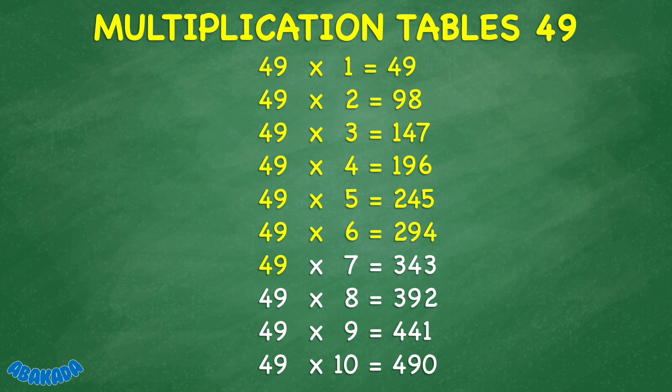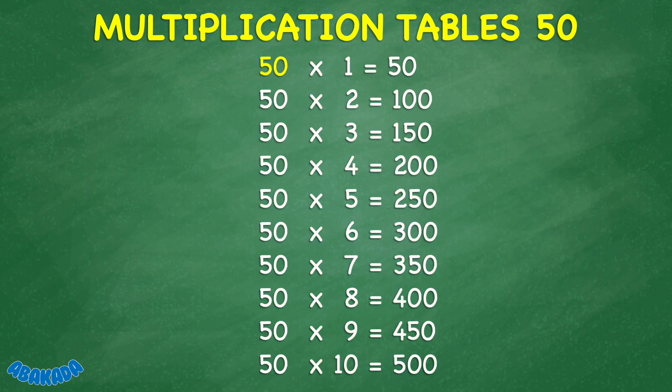49 times 7 equals 343. 49 times 8 equals 392. 49 times 9 equals 441. 49 times 10 equals 490. 50 times 1 equals 50.